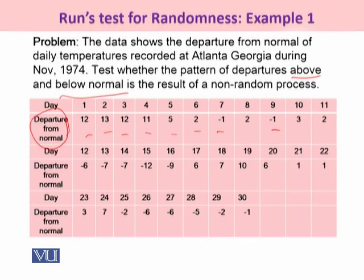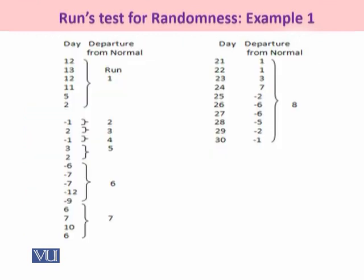Now students, if you just look into this data, I have arranged this data the way it was being shown to me. So if you just look into the first 1, 2, 3, 4, 5, 6 observations, they were showing the positive deviation from the normal temperature. So it would be treated as run number 1. Now if you just move on to the next value, it is negative. So it will be run number 2.